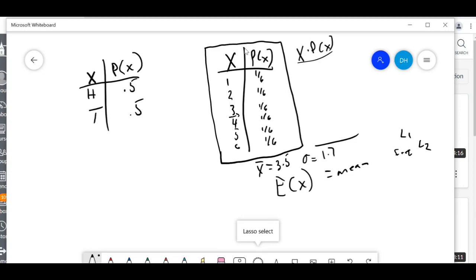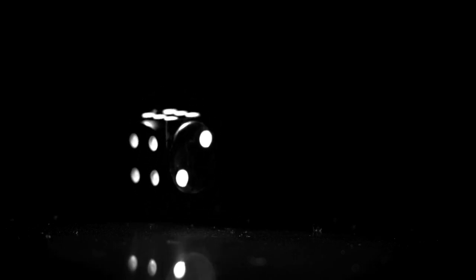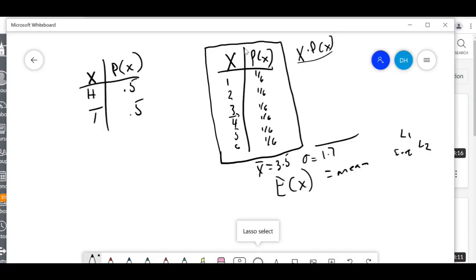Okay? So, if you were to explain this, I say, hey, explain the expected value of this situation. You say, well, on average, if I roll a dice, I could expect to get 3.5. The standard deviation just tells you that, on average, how much this varies, up or down.